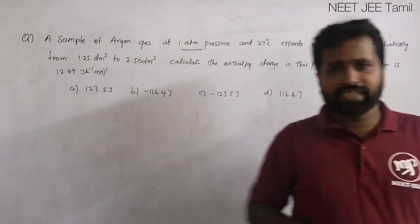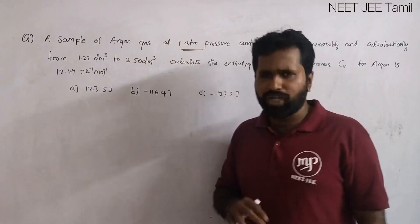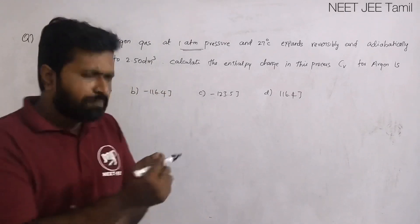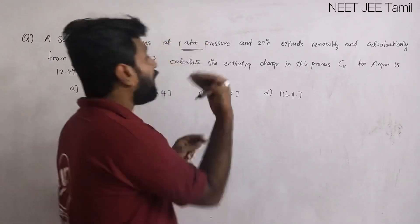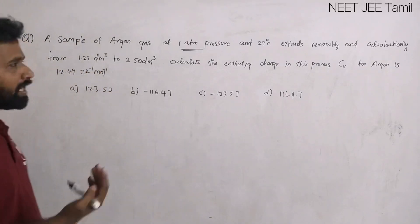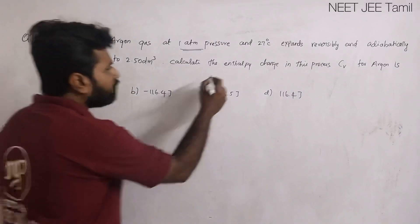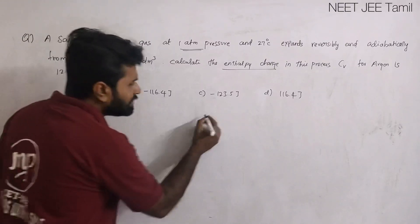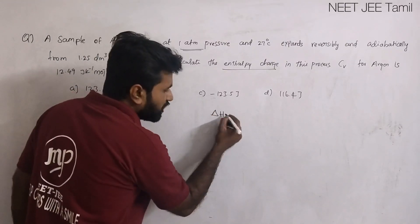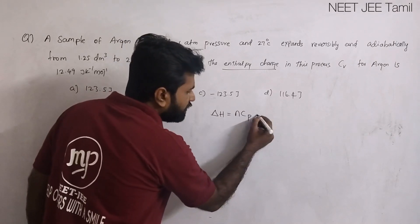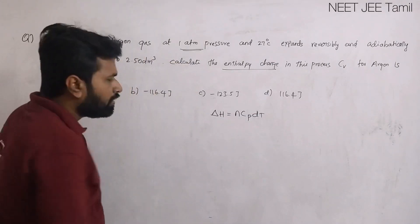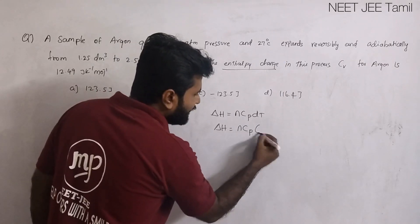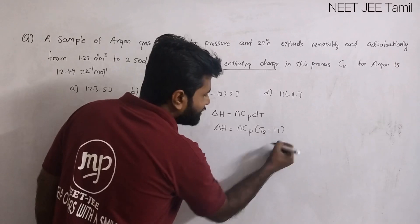When it comes to thermodynamics, let me show how I am approaching the question. To calculate the enthalpy change, we know the formula: delta H equals nCp dT. So enthalpy change is equal to nCp(T2 minus T1).